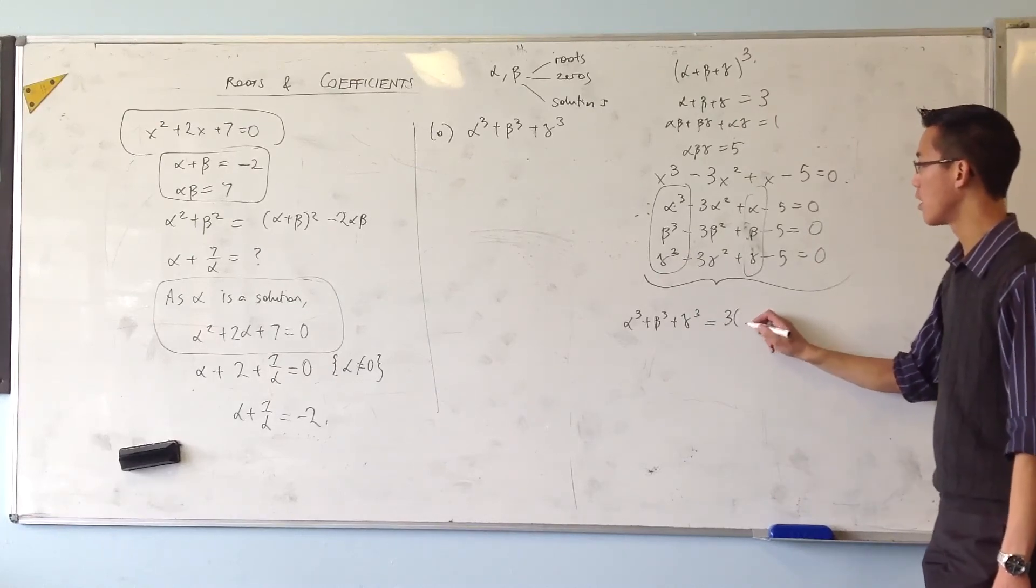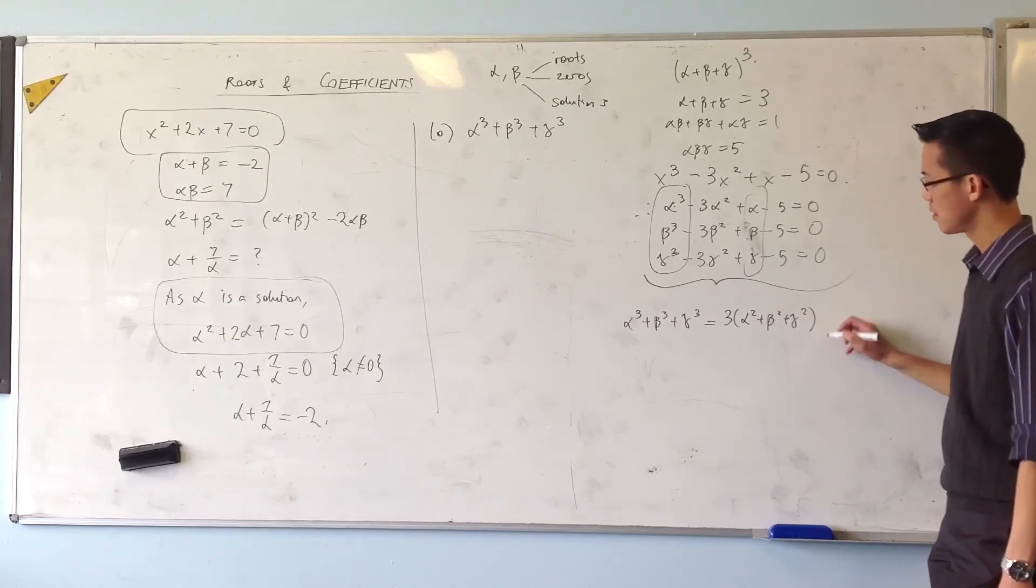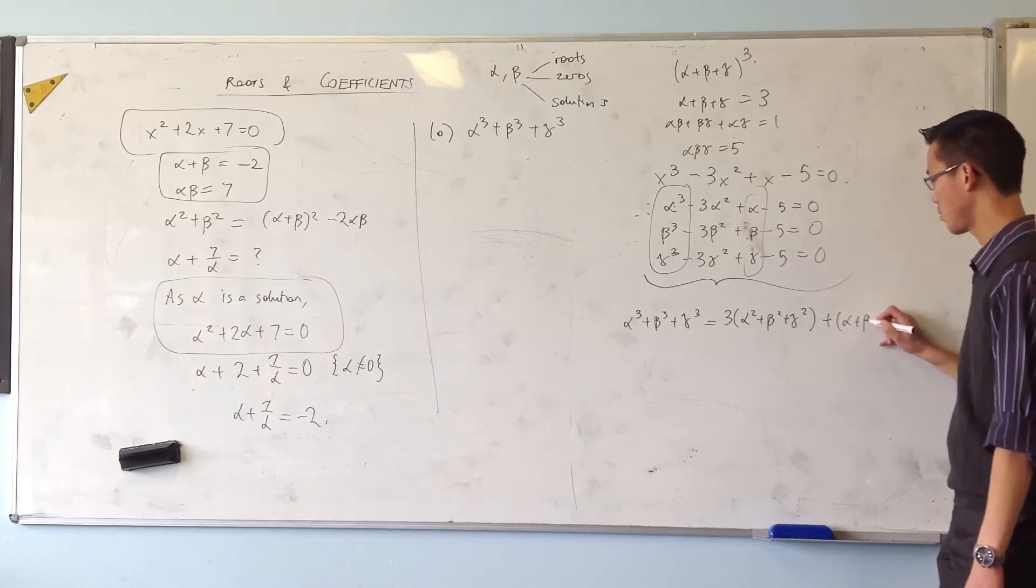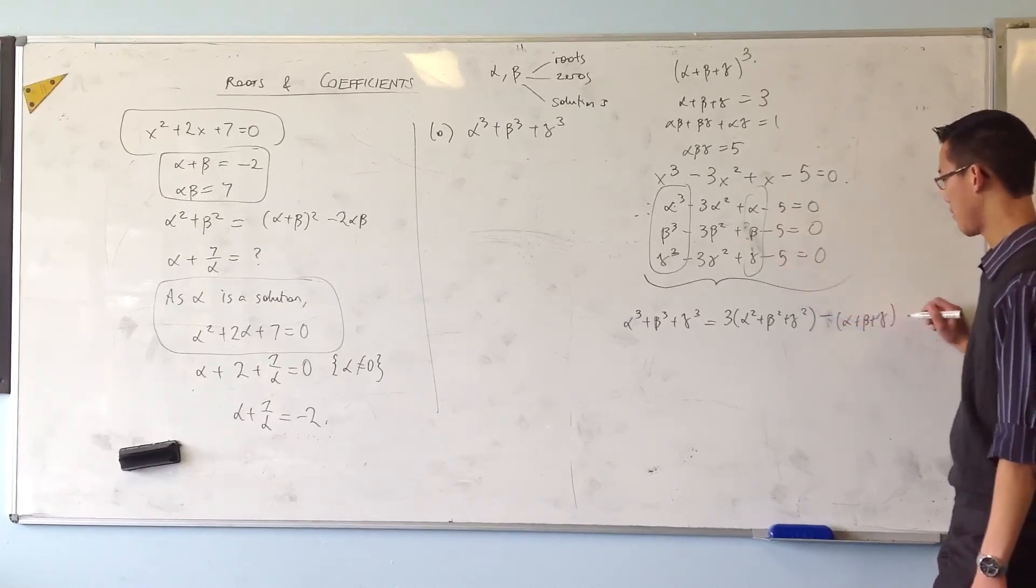So I'm going to get, let's see, three lots of alpha squared, beta squared, gamma squared. I'm going to get one lot of the sum of the roots. Sorry, that's a minus. Yeah, thank you. And then I'm going to get 15. And I think you can take it from there.